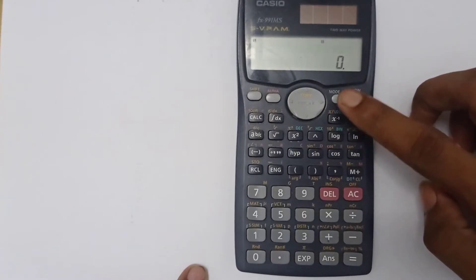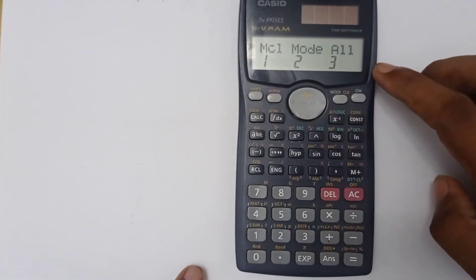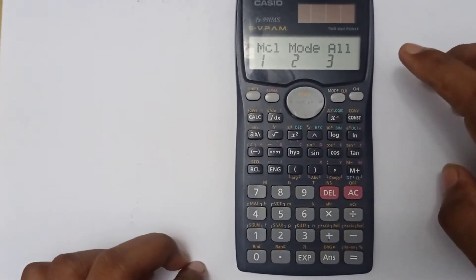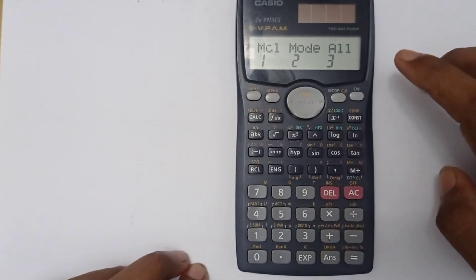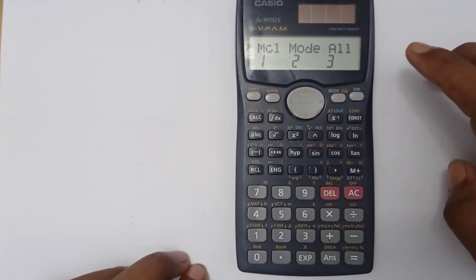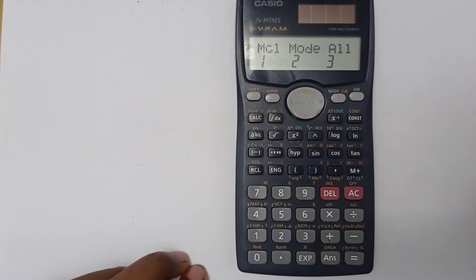Now if you want to clear only memory, then press 1. If you want to clear mode, then press 2. If you clear mode, then the setting will be reverted to its factory settings. And if you want to clear both your memory and your settings, then press 3.